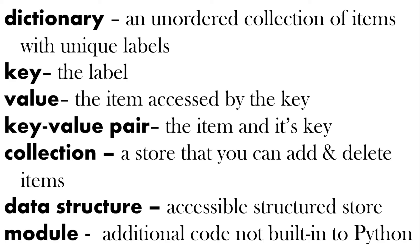What terms have we mentioned? A dictionary is an unordered collection of items with unique labels. The label is called a key. The item accessed by the key is the value — so we have the key-value pair. A collection is a store where you can add and delete items, similar to a data structure. A module is additional code not built into Python that you can add in to use different data structures.